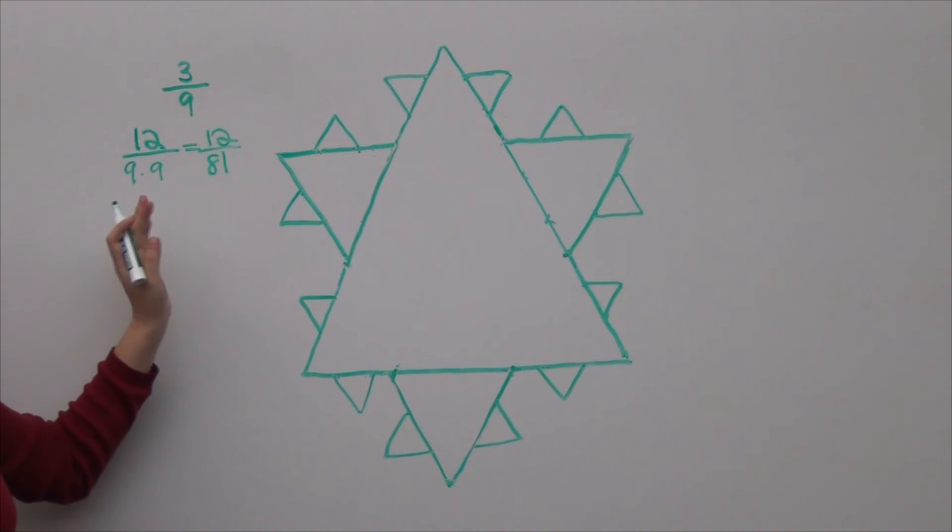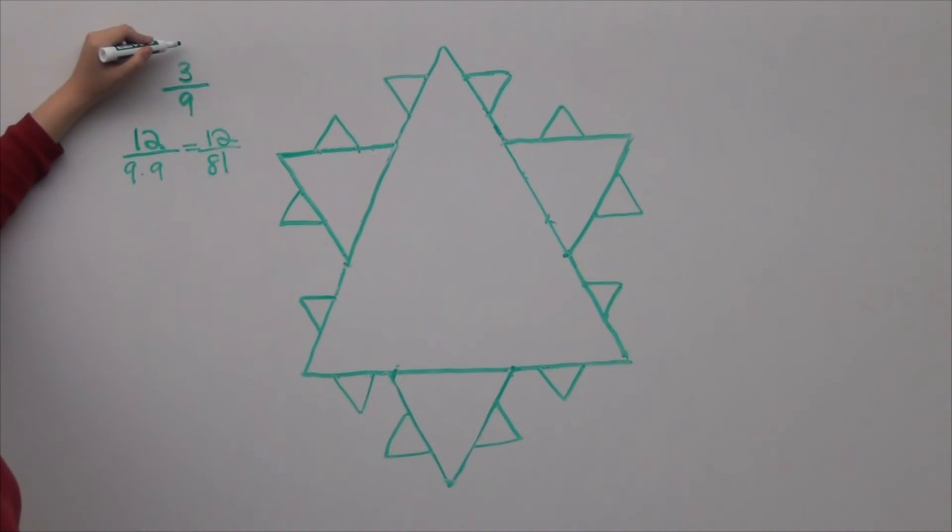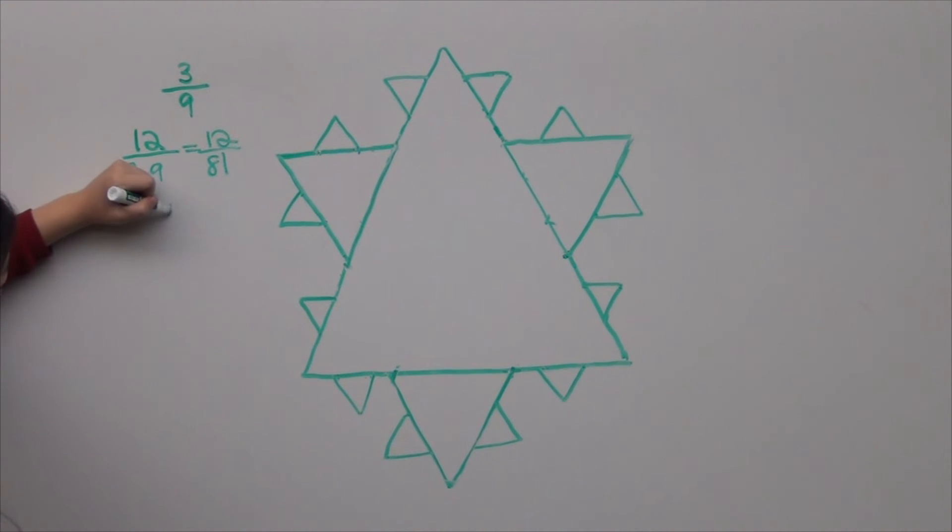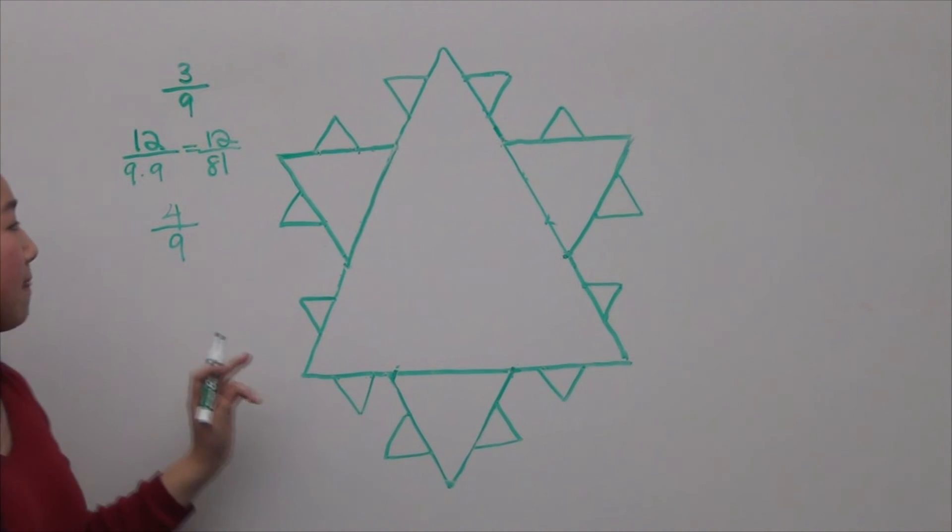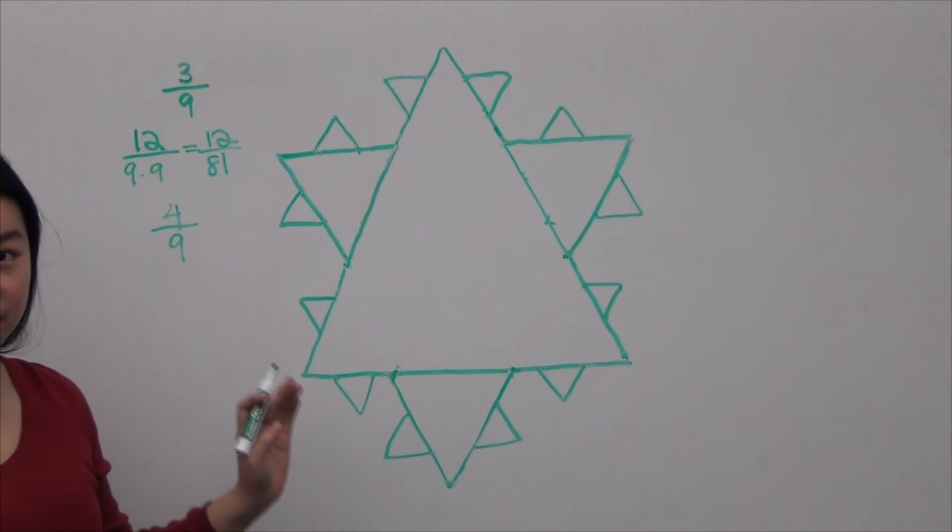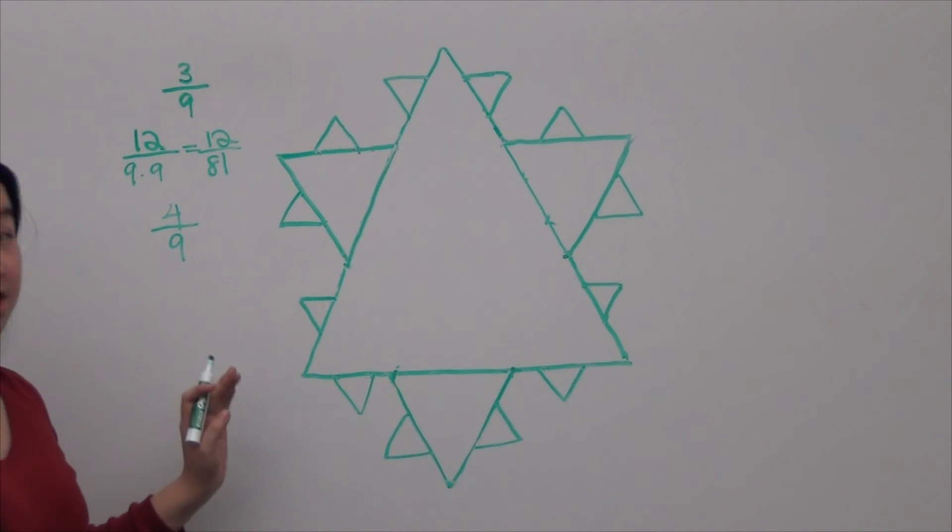So you can see that the first iteration, we added three-ninths the area of the original. The second iteration, we added a smaller amount, twelve-eighty-firsts, the area of the original. And the common factor between these is four-ninths. So with each iteration, the area we add has a common factor of four-ninths. This is a geometric series which tends to zero and eventually converges. Thus, the area of the Koch snowflake remains finite.